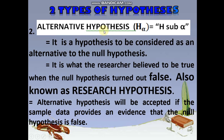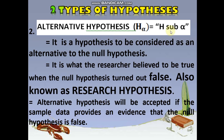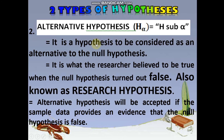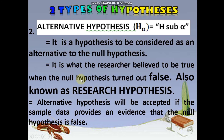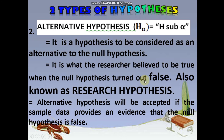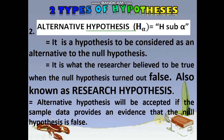For the alternative hypothesis, it is written in symbol as H sub alpha, or in some books as H sub 1. It is a hypothesis considered as an alternative to the null hypothesis — if the null is false, then the alternative will be true. It is what the researcher believes to be true when the null hypothesis turns out to be false. It is also known as the research hypothesis. The alternative hypothesis is accepted when sample data provides evidence that the null hypothesis is false.